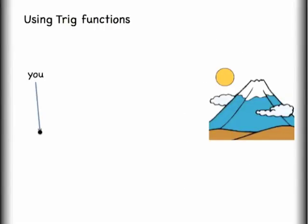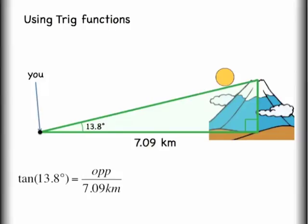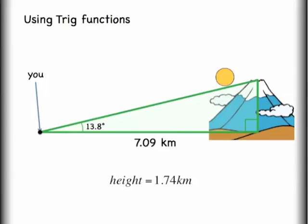Here's a practical example: if you're sitting far from a mountain and your GPS tells you you're 7.09 kilometers from the peak, you can make a triangle. You measure that you have to look up 13.8 degrees beyond horizontal. Using the tangent function — because the height is the opposite side — tangent of 13.8 equals the unknown height divided by 7.09 kilometers. Multiplying 7.09 to the other side gives a height of 1.74 kilometers.